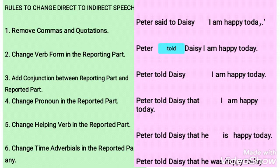Third rule: add a conjunction between the reporting part and the reported part. 'Peter told Daisy' is the reporting part. 'I am happy today' is the reported part. We have to add a conjunction between them. Here we add 'that' — a conjunction. So: 'Peter told Daisy that I am happy today.'